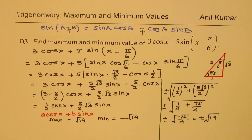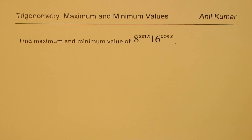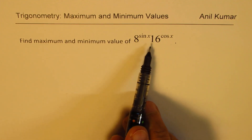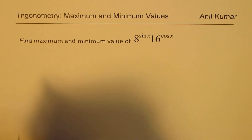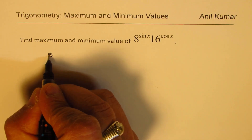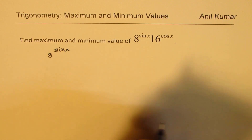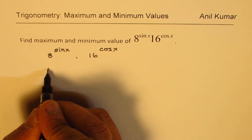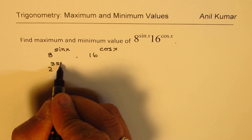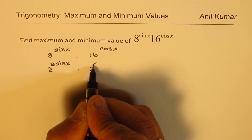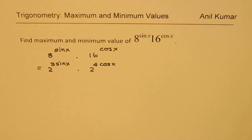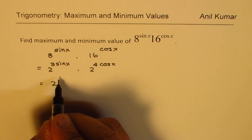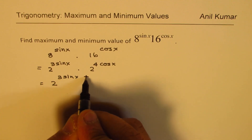Let me add a bonus question: find the maximum and minimum value of 8 to the power of sin x times 16 to the power of cos x. We can write 8 as 2 to the power of 3, so the expression becomes 2^(3 sin x) times 2^(4 cos x), which equals 2^(3 sin x plus 4 cos x).